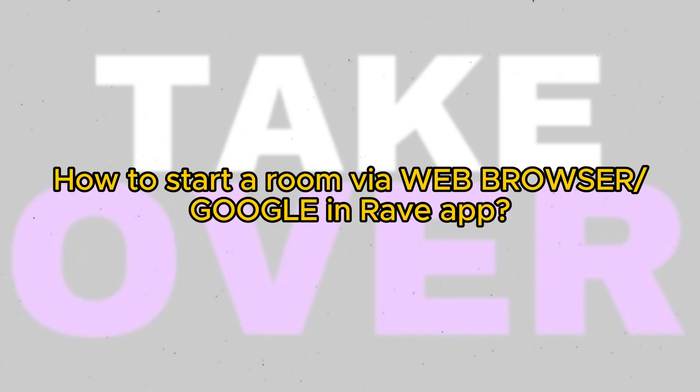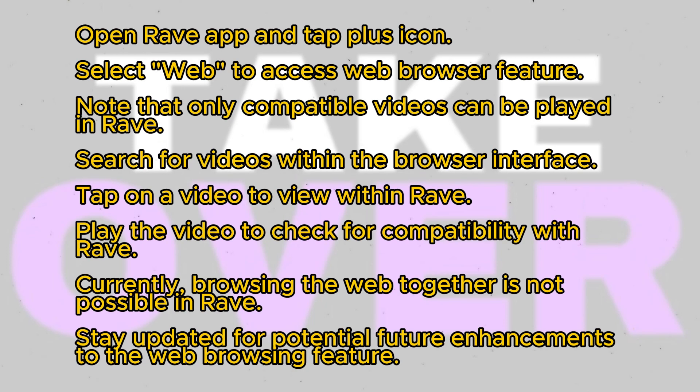In this tutorial, we'll explore how to initiate a room using the web browser feature within the Rave app on Android. Follow these steps to create a shared viewing experience with your friends. Begin by opening the Rave app and tapping the plus icon located at the bottom of the screen. Select the web button to access the web browser feature within the app.